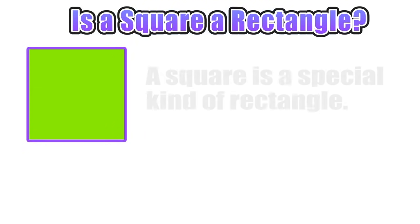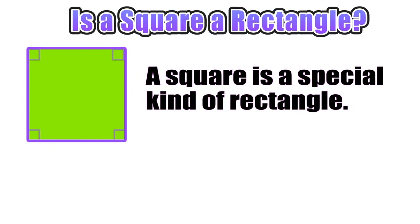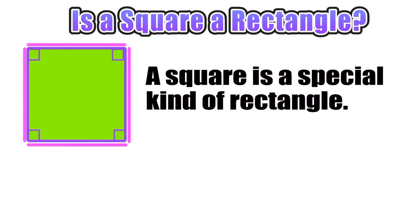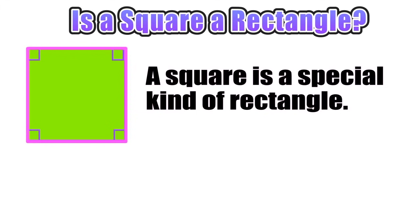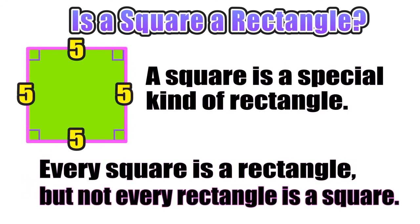Since the square satisfies the definition of a rectangle, we can say that a square is a special kind of rectangle. What makes it special is not just that it has four right angles, but that it has four equal sides — all sides are congruent. So if you knew that one side of a square was five, you would know all sides must be five. We can conclude that every square is a rectangle, but not every rectangle is a square.